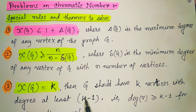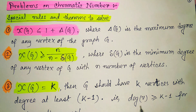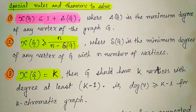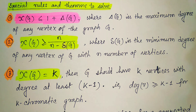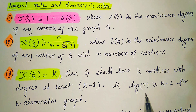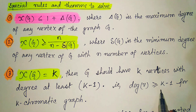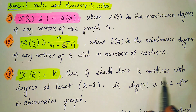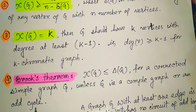Next, the chromatic number of G equals k where G should have k vertices with degree at least k minus 1, that is degree ≥ k−1 for a k-chromatic graph. That means if we find that the degree of k vertices is greater than or equal to k−1, then we can say the graph is k-chromatic.